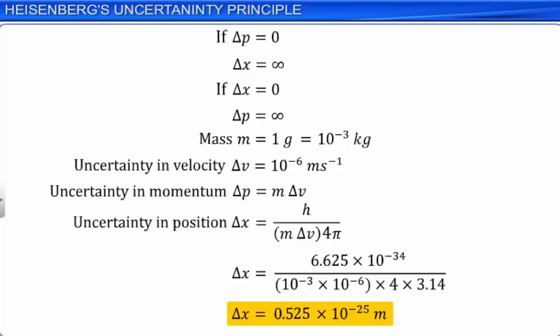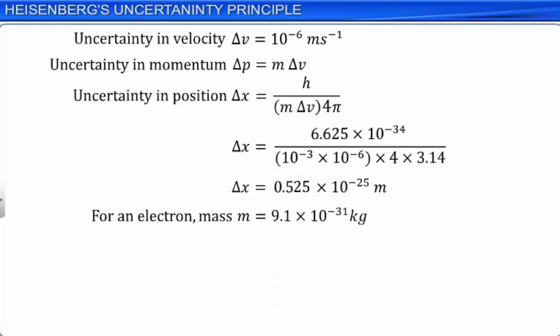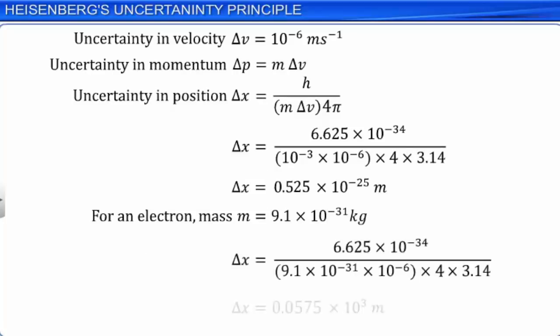For the same uncertainty in the velocity, if we consider an electron, then substituting the mass of the electron m = 9.1 × 10⁻³¹ kg, we get the minimum uncertainty in the position delta x for the electron, which is very huge and far greater than the size of the atom. Thus, for subatomic particles, the uncertainty in the position is very high. Hence, we can say that the uncertainty principle has a larger importance in the context of the subatomic world.